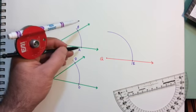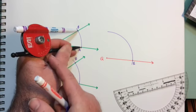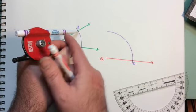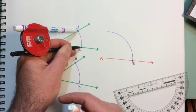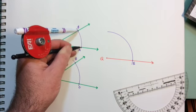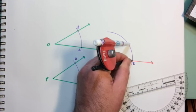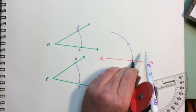Now I'm going to set my compass to the distance from A to B. I'm going to transfer my point to E and make an arc through that line.